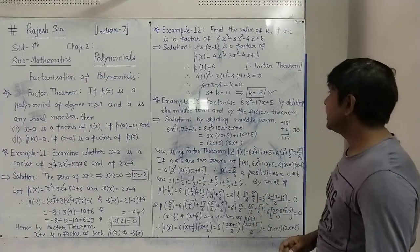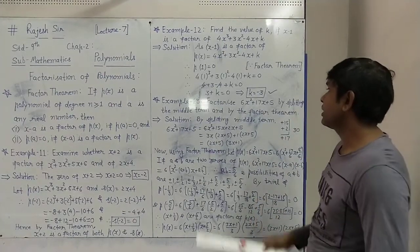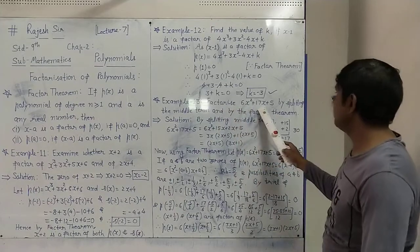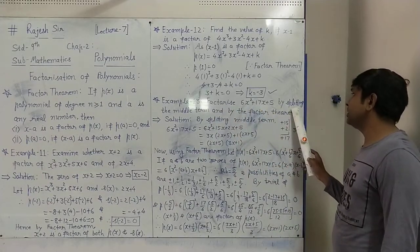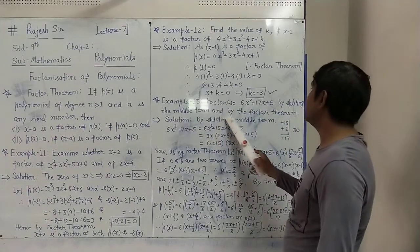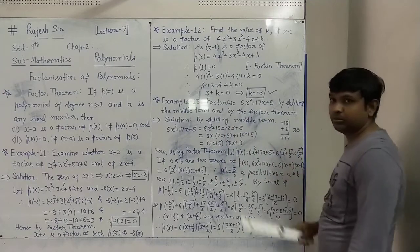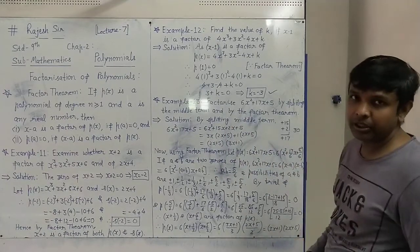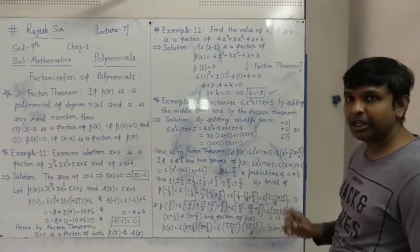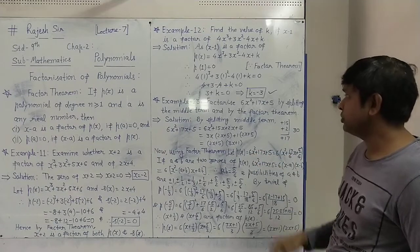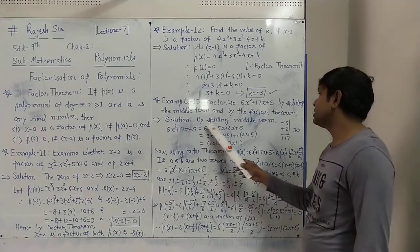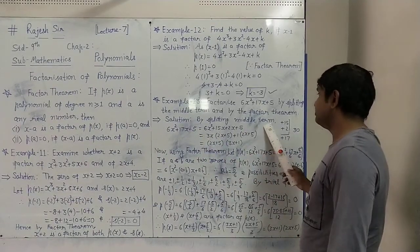Example 13 now we have: factorize 6x squared plus 17x plus 5 by splitting the middle term and by Factor Theorem. By both methods we have to find. First we will see by splitting the middle term.